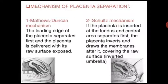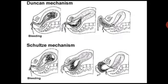Then the Schulze method. The placenta is inserted at the fundus and the central area separates first. The placenta then inverts and draws the membranes after it, covering the raw surface.